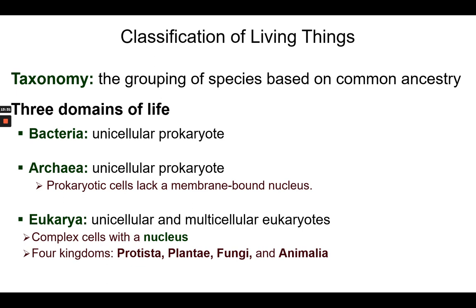How do we classify living things? Taxonomy is the science of grouping species based on common ancestry. We look at an unknown organism and based on its characteristics determine whether it is a plant, an animal, a fungi, a bacteria, an archaea, and so forth. Once we determine that, we can go narrower — for example, an unknown organism is an animal and it belongs to mollusca, so it is more similar to mollusks than any other animal. That is the science of taxonomy.